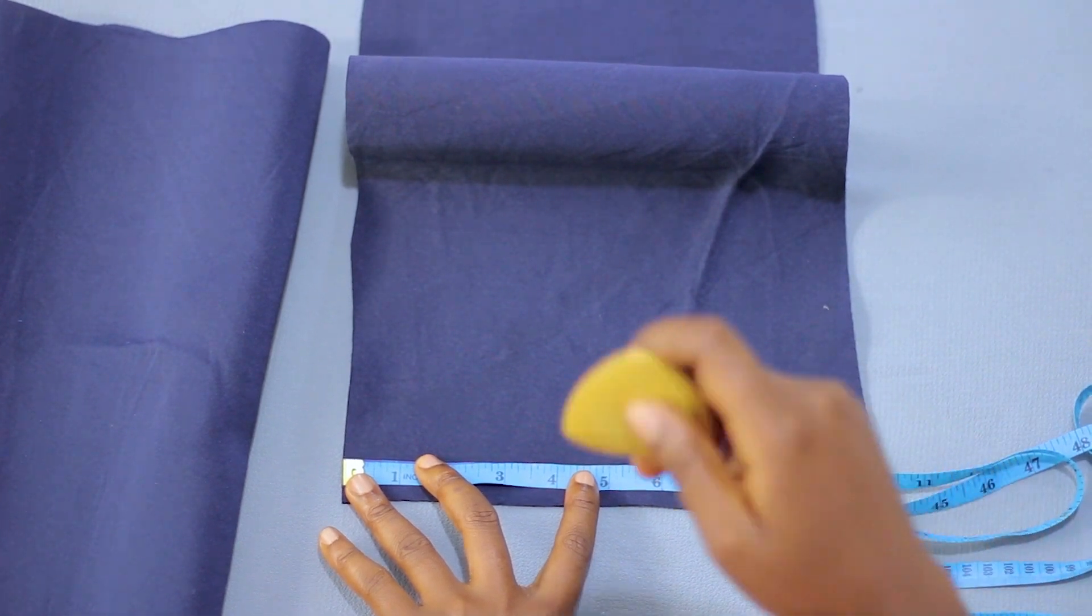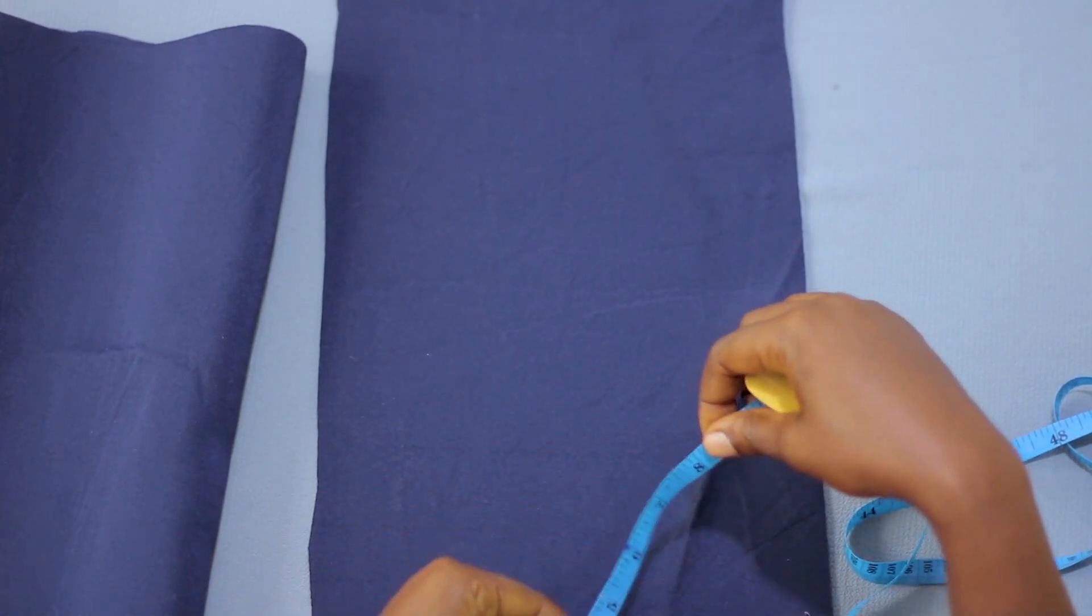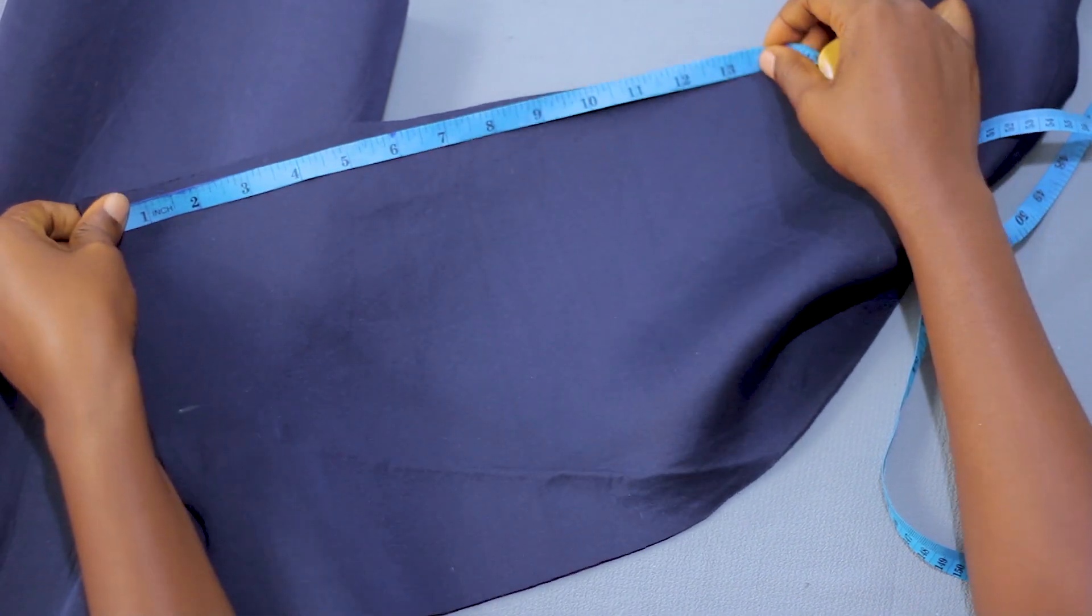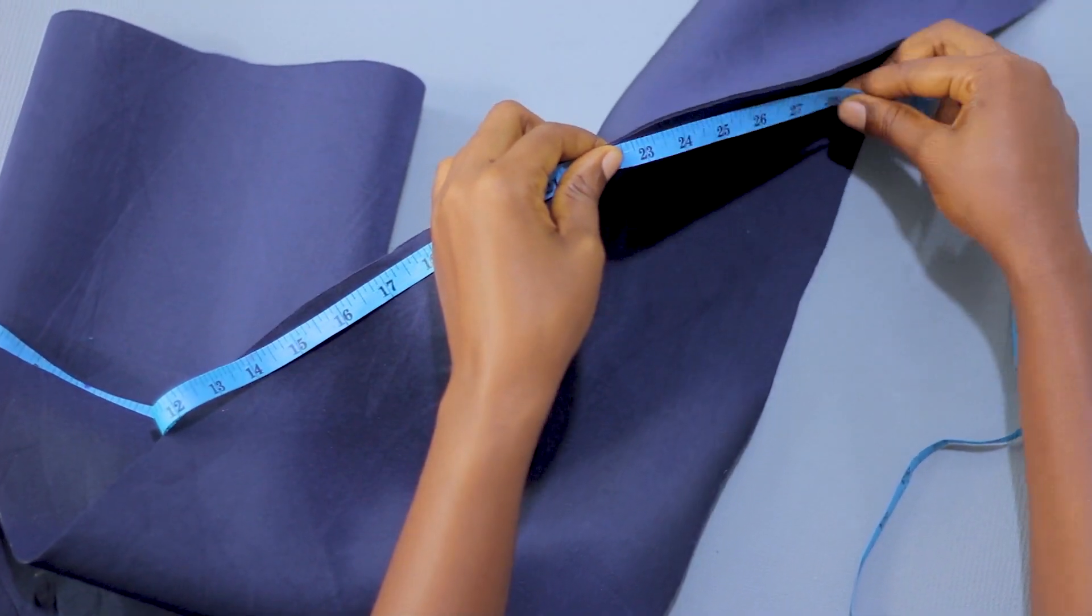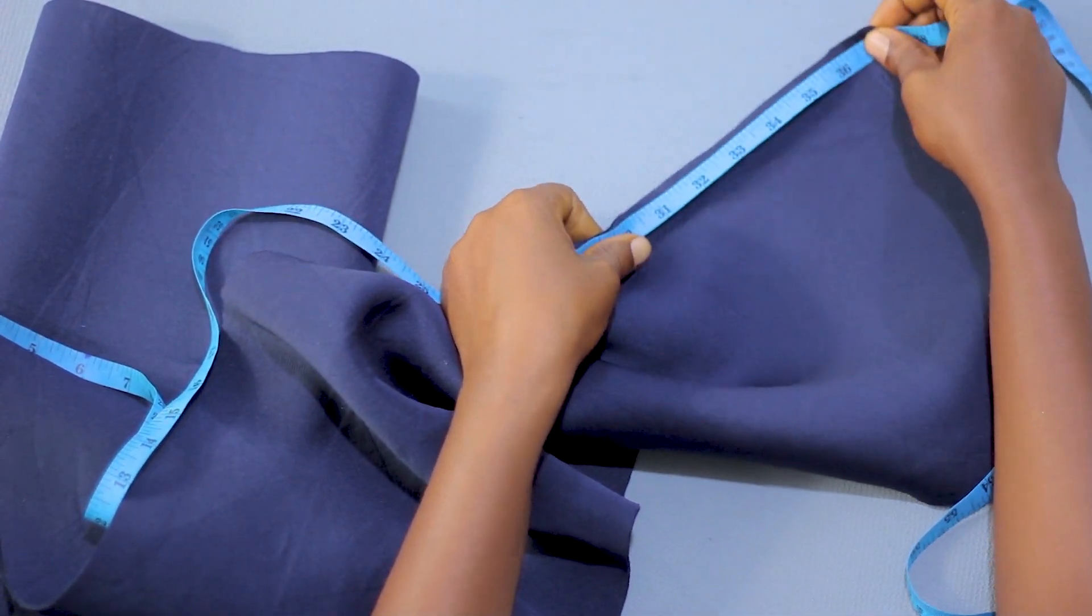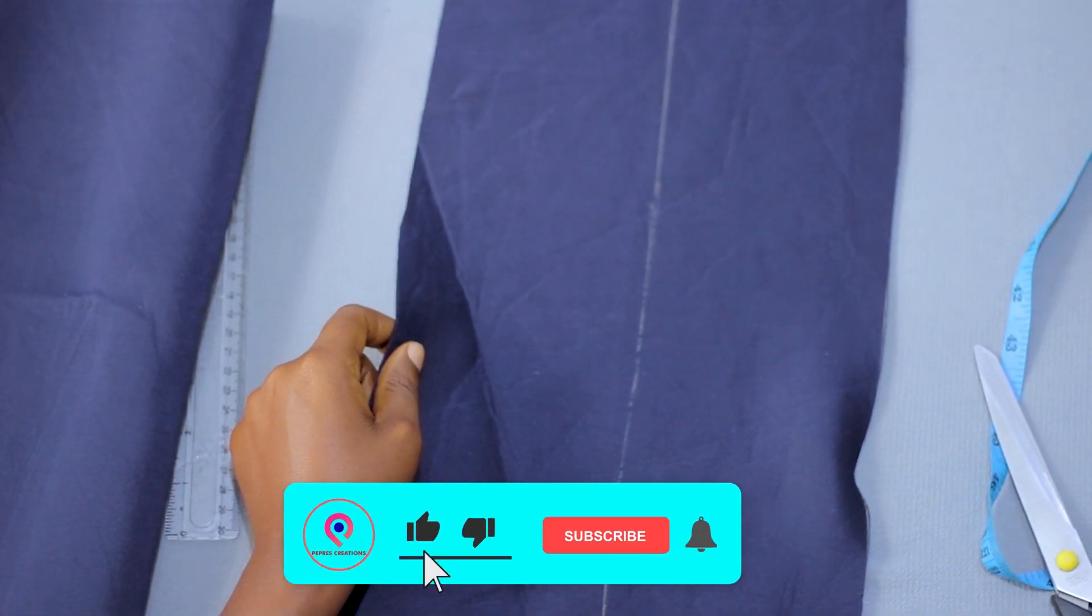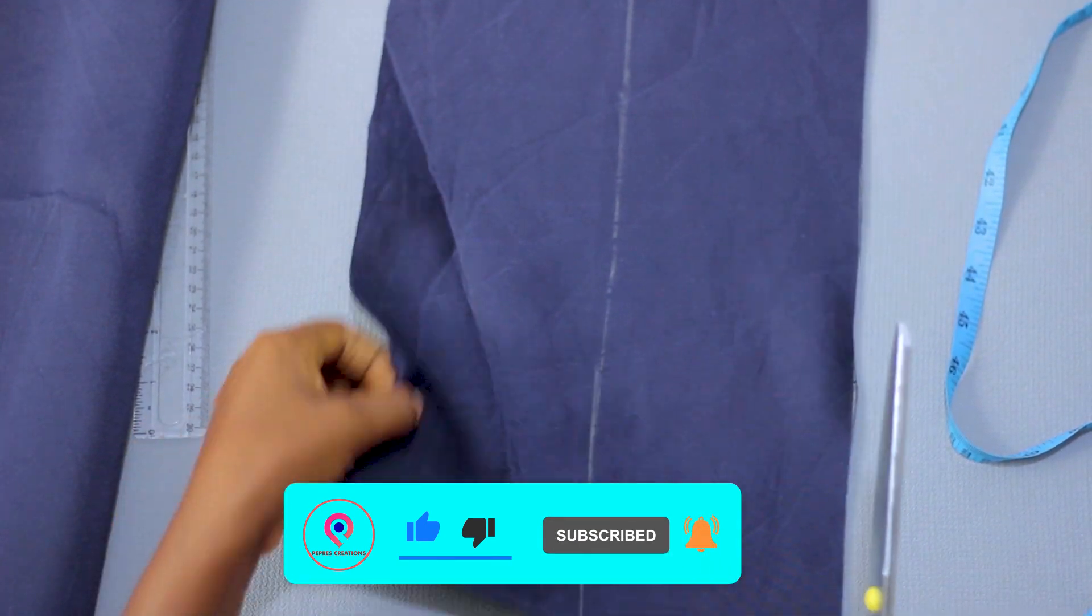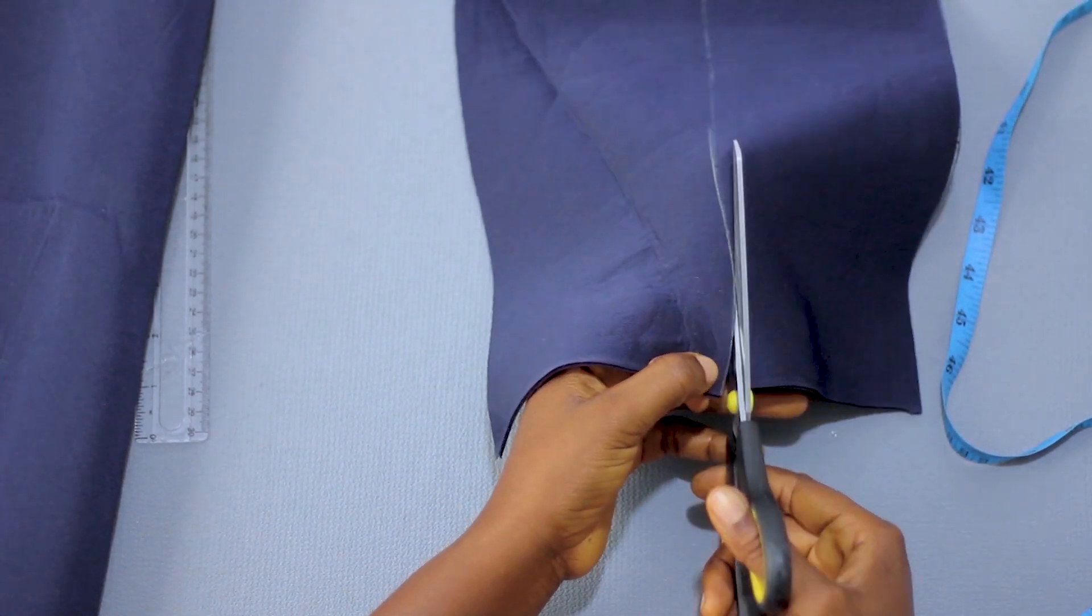I'm cutting five inches wide, then 36 inches long. This is it. You can use a ruler to draw a straight line from where you have your markings, and then you cut it out. I'll just follow the line and cut.